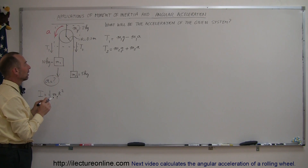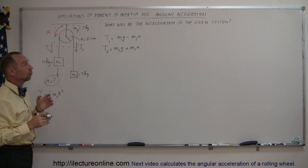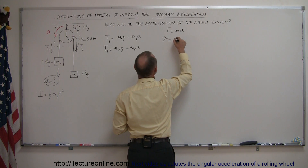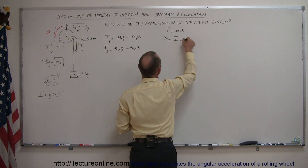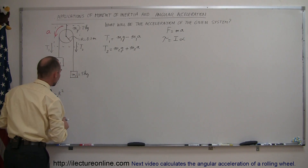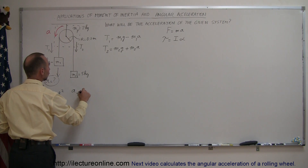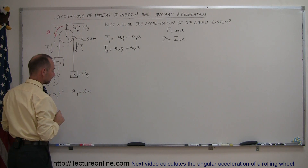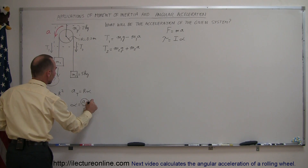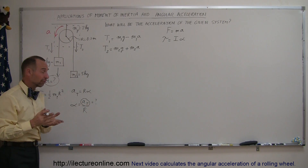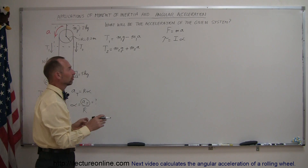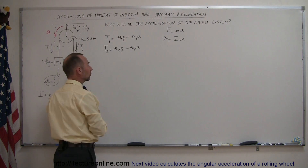Now that we have the two tensions, those are the only two forces causing the pulley to accelerate. We can use the rotational equivalent of Newton's second law: instead of F = ma, we write torque equals I times alpha, where I is the moment of inertia of the pulley and alpha is the angular acceleration. This angular acceleration is related to the linear tangential acceleration by A_tangential = R times alpha, so alpha = A_tangential / R. If we're looking for the acceleration of the system, we're looking for the tangential acceleration, and that's how it relates to the angular acceleration.